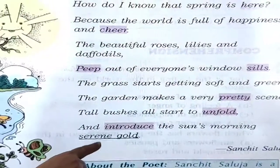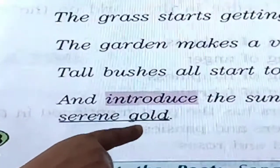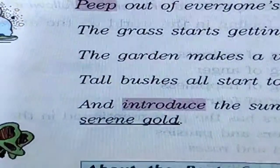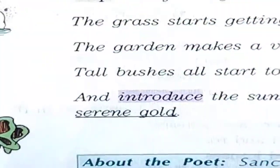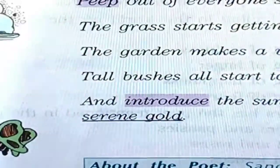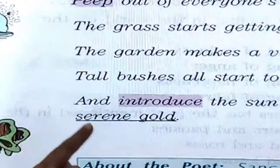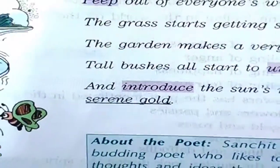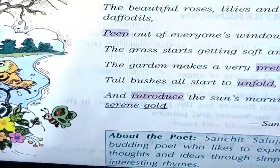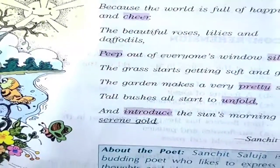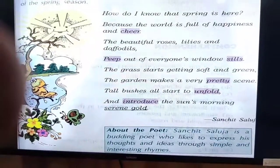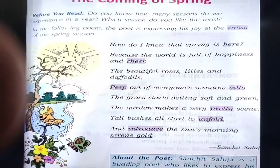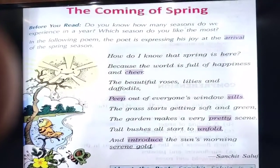Now one more is 'Serene Gold.' It is not a word — it is a phrase. A phrase means a group of words, but it is not a sentence. Serene Gold means the golden yellow light of the sun — very calm, very charming, golden kind of light. You can make the sentence: a serene gold light of the sun spread out in the morning.